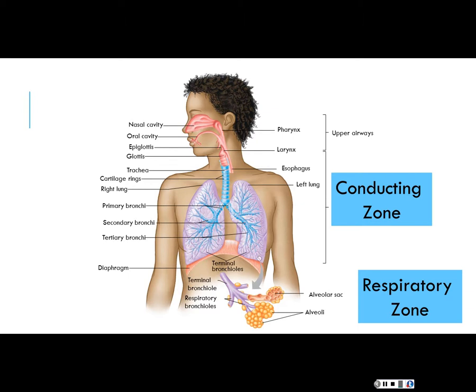The respiratory zone has gas exchange with the pulmonary capillaries — oxygen unloading out of the alveoli and carbon dioxide loading into the alveoli. The respiratory zone starts at your terminal bronchioles through the individual alveoli. Everything else just conducts. The trachea and main stem bronchi won't do any exchange with the pulmonary circuit.